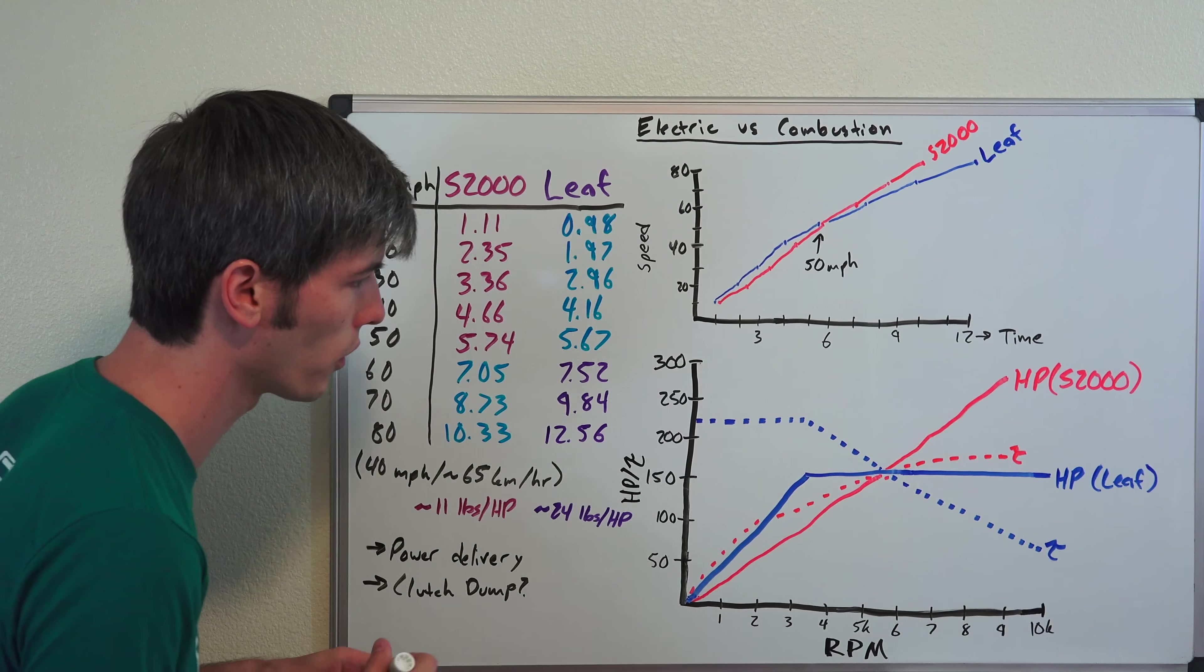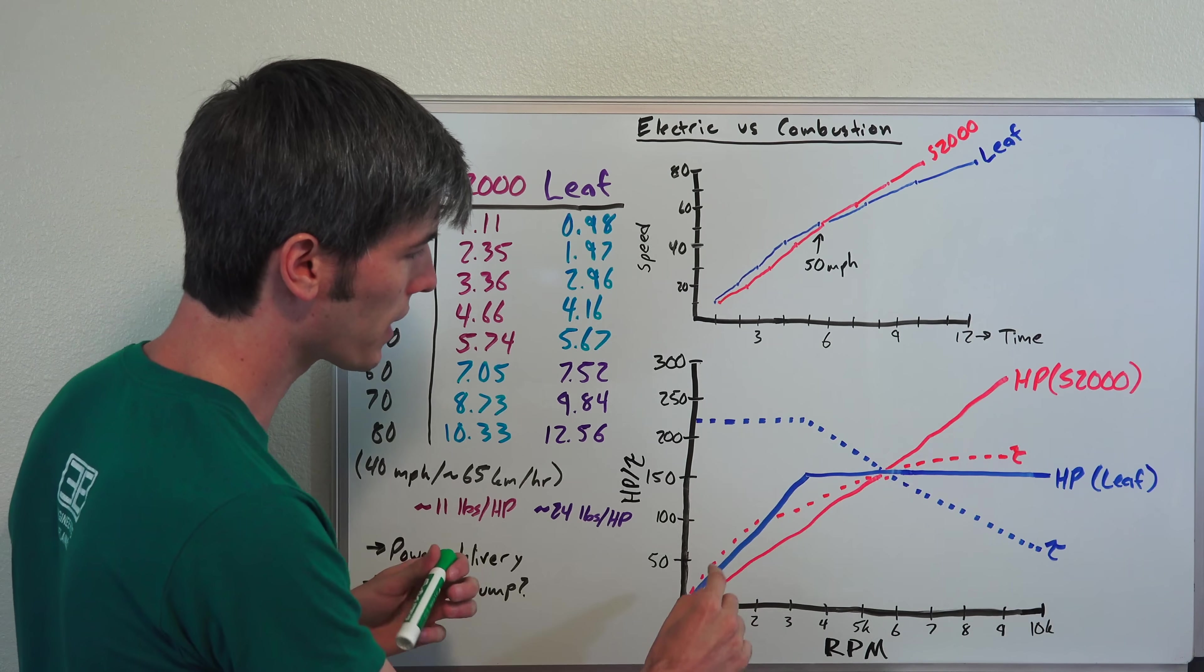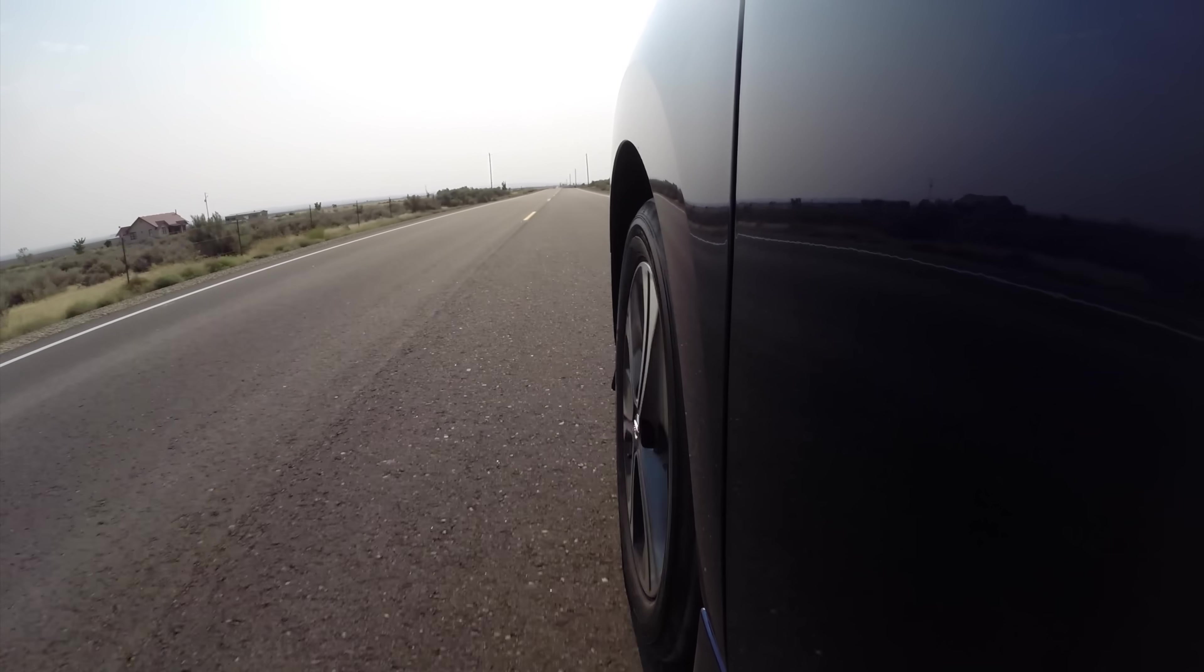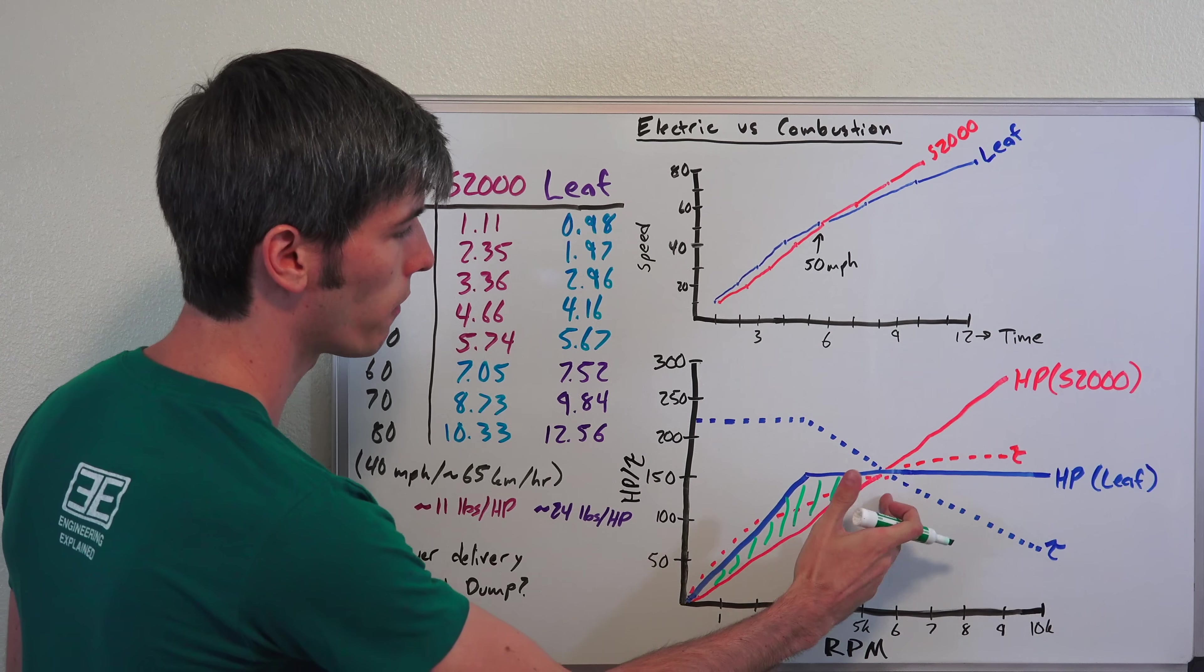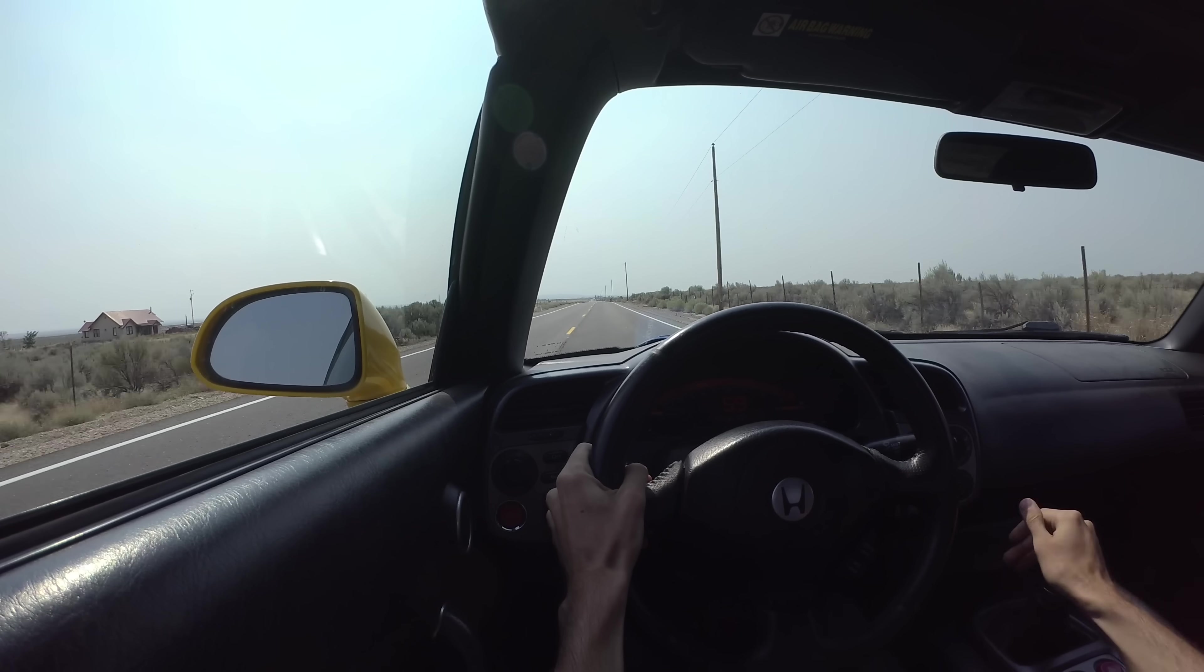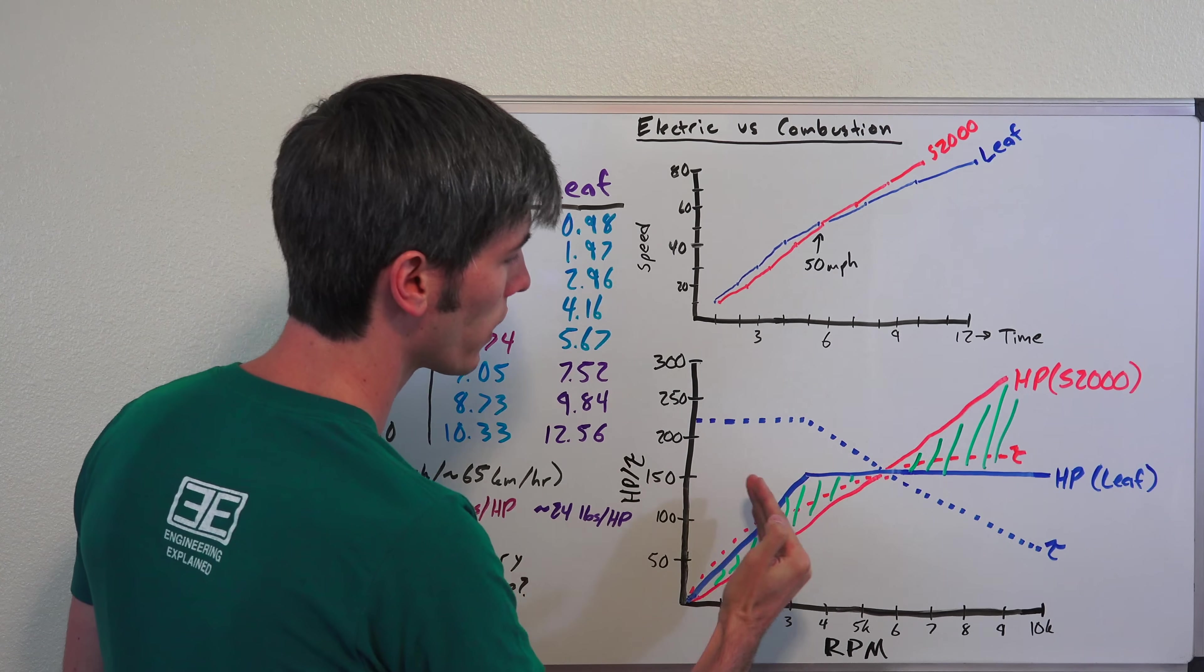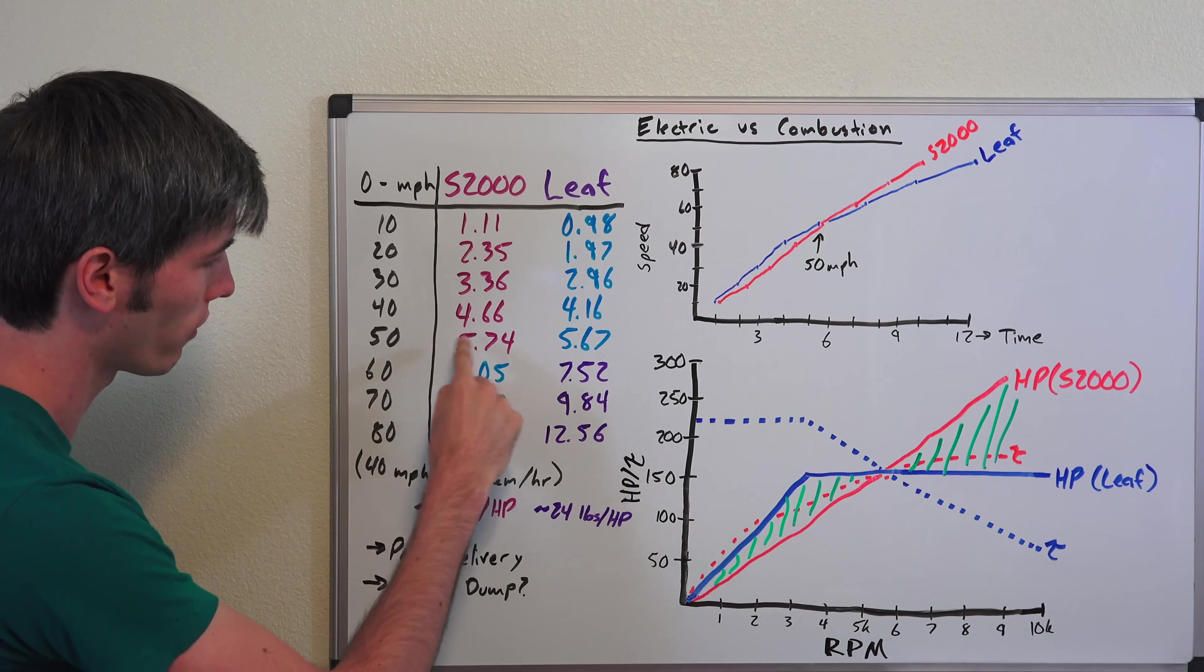The reason why we see the Nissan Leaf have the edge initially is because initially it makes more power. At these lower speeds, the Nissan Leaf is putting more power down to the ground, it's doing more useful work, so it's accelerating the car faster. Then once the S2000 gets to about 20 to 30 miles per hour, once it gets past about 5,000 RPM, it gets in its sweet spot where it's now making more power than the Leaf, so then it starts to accelerate faster.